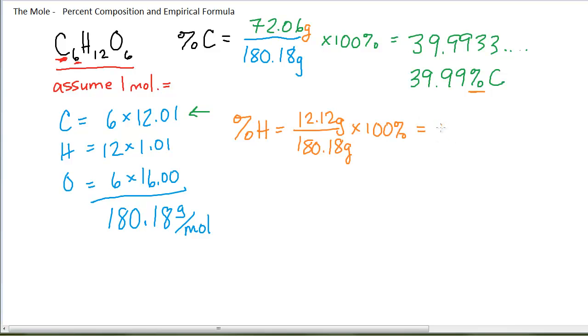And I find, after I multiply by my 100 percent, that I have 6.73 percent hydrogen. Now technically, I should go out to four sig figs with this, in which case it would be 6.727 percent hydrogen.